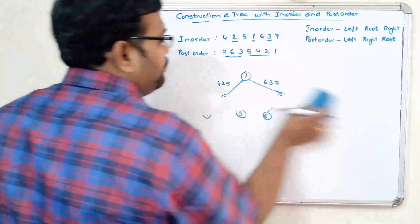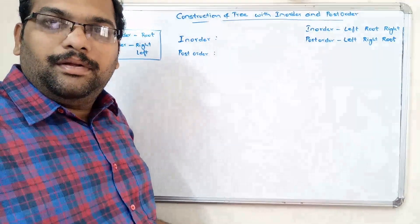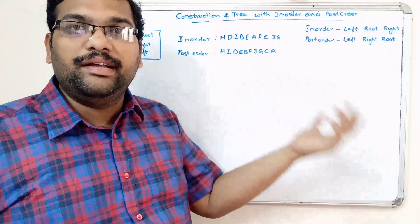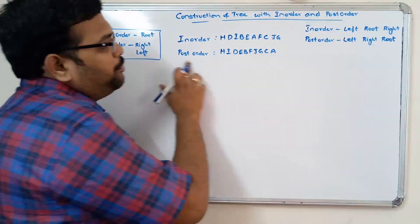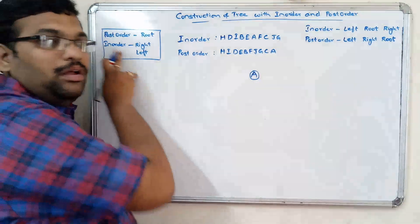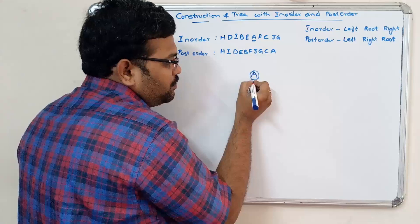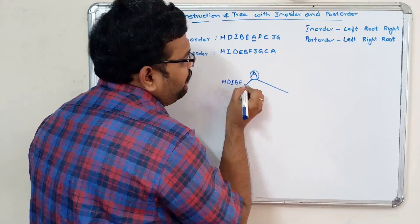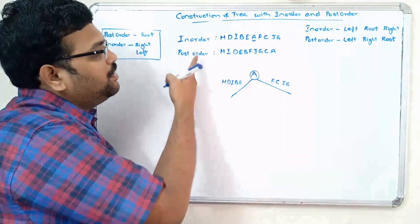Let us take one more example with more nodes and construct the binary tree. With the help of postorder we find the root — the last element is A, so A is the root node. Coming to the right and left child, we go with the inorder. A is here, and there are more elements on both sides. On the left: H, D, I, B, E — five elements. On the right: F, C, J, G — four elements. Among these five elements, we again find the root using the postorder.